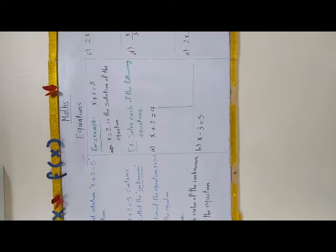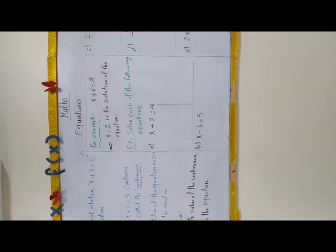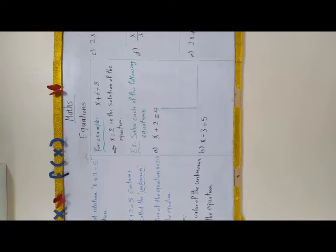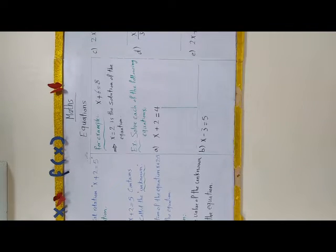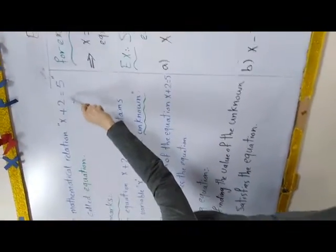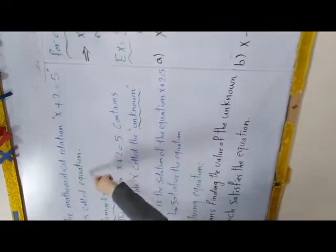When you weigh something using a balanced scale, you find that the weight in the left pan is equal to the weight in the right pan. This situation expresses an important mathematical relation called the equation. So this mathematical relation x plus 2 equal 5 is called an equation.